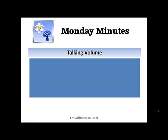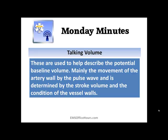So when we talk about this, we're talking about the volume of the patient's pulse. What we're trying to do is describe that potential baseline volume of the patient. What we're talking about mainly is the movement of the artery wall by the pulse wave, and it's determined by the patient's stroke volume and the condition of their vessel walls. That can change depending upon what's going on with the patient — is it a cardiac event? Is it a traumatic event? All of this will translate when you're talking about the quality or the volume of what you might think their baseline is for that patient.